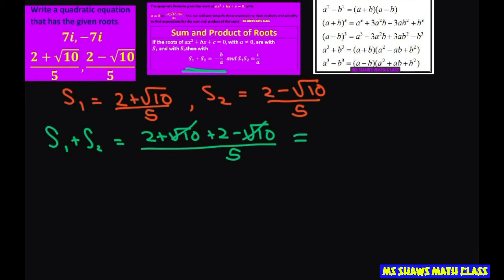Then the square root of 10s go away, so you get 4 5ths. And that's going to be your negative b divided by a.